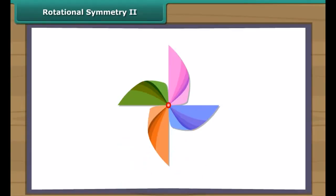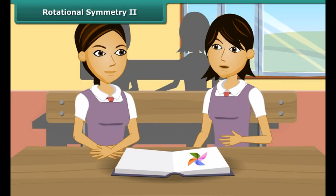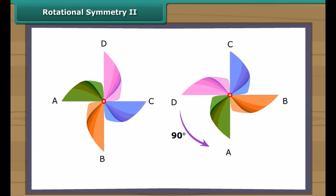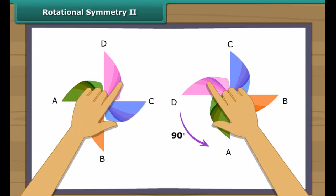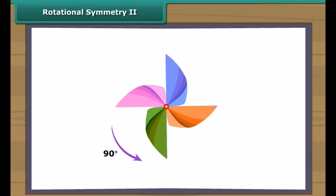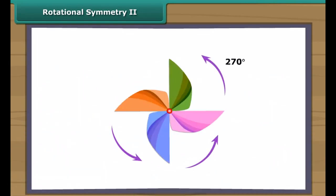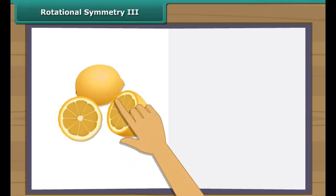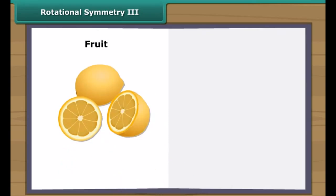This is a paper windmill. It has rotational symmetry. If you rotate it by 90 degrees about the fixed point, the windmill will look exactly the same. In a full turn, there are four positions — on rotation through the angles 90 degrees, 180 degrees, 270 degrees, and 360 degrees — when the windmill looks exactly the same. Therefore, we can say that it has a rotational symmetry of order 4.